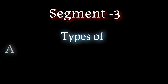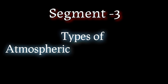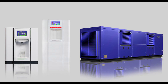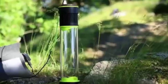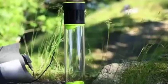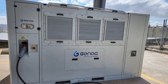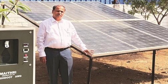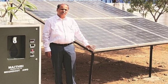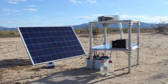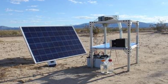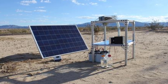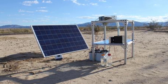There are various types of AWGs, ranging from small, portable units to larger industrial ones. Some even use renewable energy sources like solar power to operate. This means you can potentially create water in remote or disaster-stricken areas where clean water might be scarce.